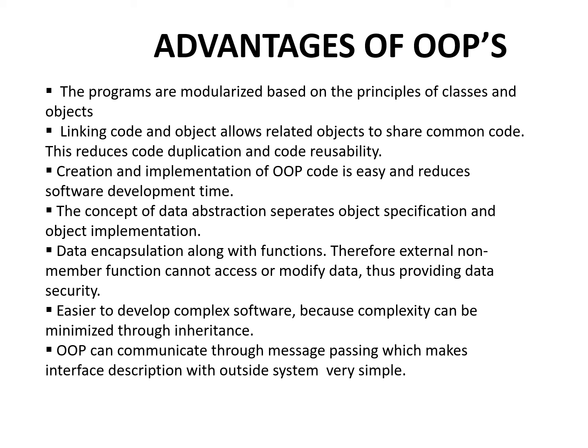To recap the advantages: programs are modularized based on classes and objects. Related objects share common code. Data abstraction separates object specifications from implementation. Data encapsulation with functions ensures external non-member functions cannot access or modify data, providing security. It is easier to develop complex software through inheritance, and objects communicate through message passing, which makes the interface description with outside the class.